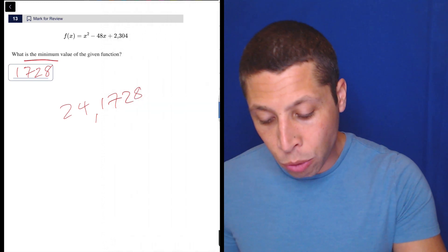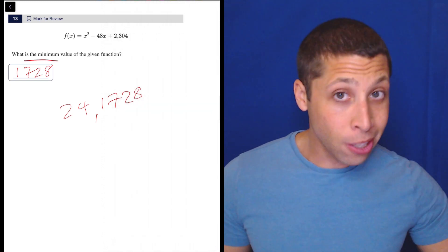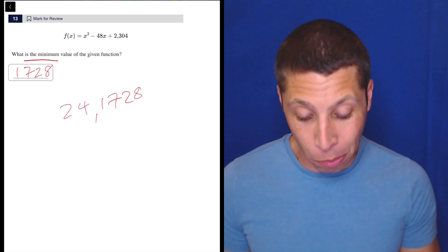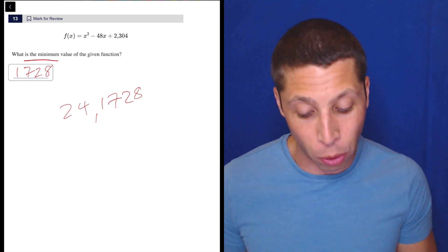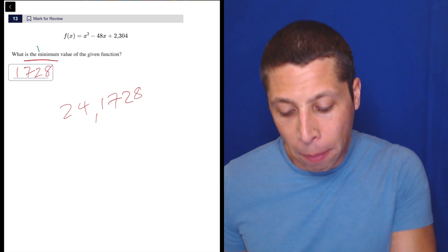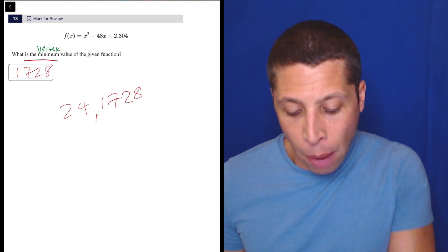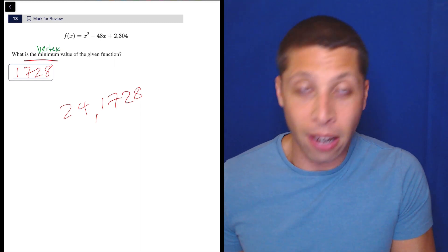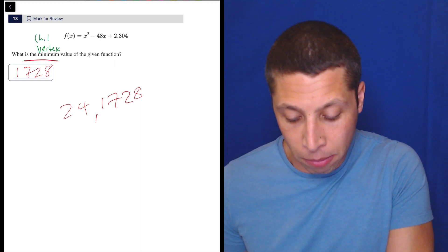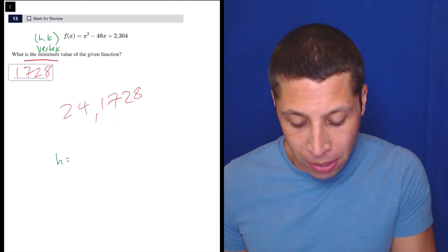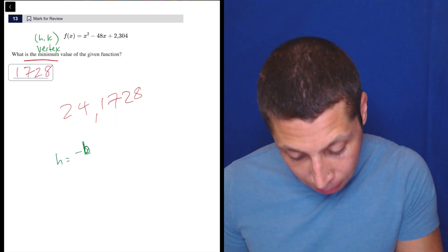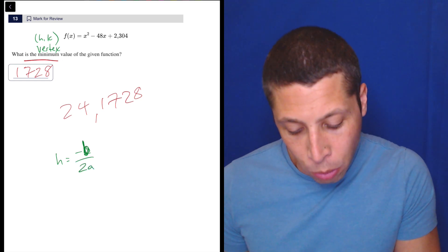But basically, if you don't want to do it that way, you can use a formula. I don't know that it's super awesome here to get it more quickly. But when we think about minimum, we're thinking about vertex. We have to remember that the vertex, the x coordinate of that vertex, what we sometimes call h, is equal to negative b over 2a.